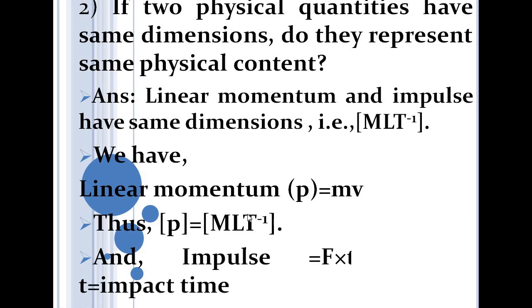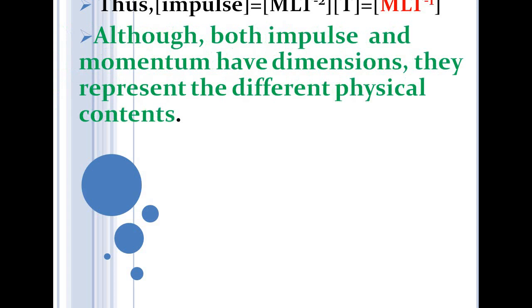Impulse is defined as force multiplied by time interval, F × t. Force has dimension MLT⁻², multiplied by time T gives MLT⁻¹. So impulse also has dimension MLT⁻¹. Now, both impulse and momentum have the same dimension; however, they represent different physical quantities.